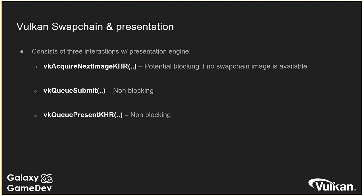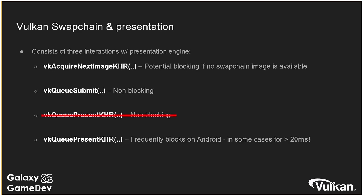According to common knowledge, VK acquire image is a blocking function — it can block if there's no image available. This normally only happens when the CPU is too far ahead of the GPU. Submit is non-blocking, and present is normally considered non-blocking. But this is where the problem lies: on mobile, we actually find that present frequently blocks. This surprised us and surprises a lot of developers. It's become a really major performance problem for titles that don't anticipate it.